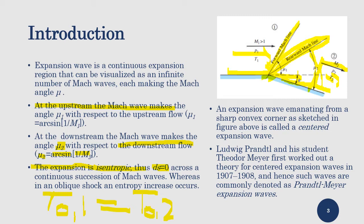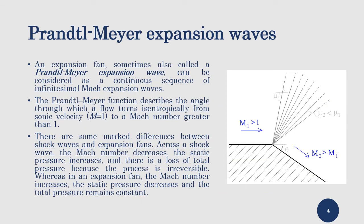Looking back through history, the first scientists to perform this research were Ludwig Prandtl and his student Theodore Meyer. This was part of Meyer's major dissertation, conducted during 1907 and 1908. Therefore this theory is famously known as the Prandtl-Meyer expansion wave.